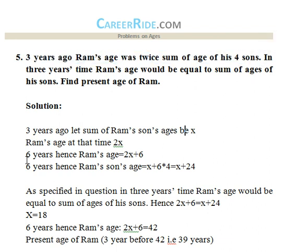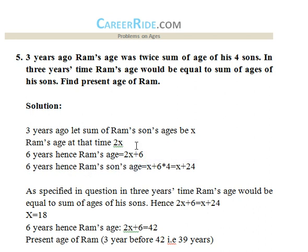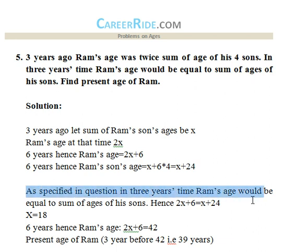Six years hence from that point — that is, three years into the future from today — Ram's age would be 2x plus 6. For the four sons, we add six years to each, so their total becomes x plus 24. As stated in the question, in three years' time Ram's age equals the sum of his sons' ages, so: 2x plus 6 equals x plus 24.